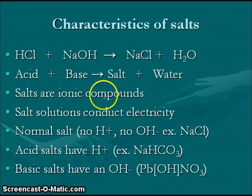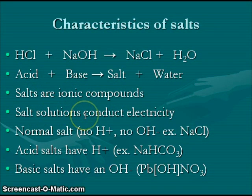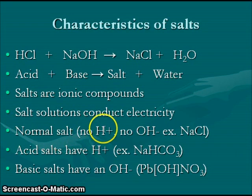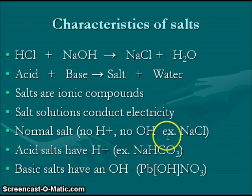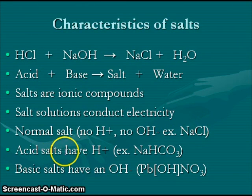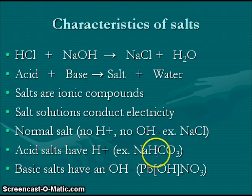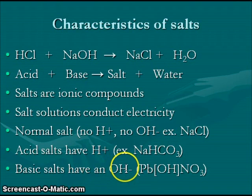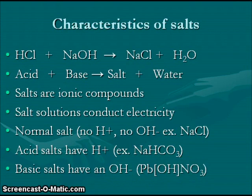Salts are produced in neutralization reactions. Salts are ionic compounds; when dissolved in water, their solutions conduct electricity. A normal salt contains no hydrogen ions and no hydroxide ions — for example, sodium chloride. Acid salts contain hydrogen ions — for example, sodium bicarbonate. Basic salts contain an OH group.